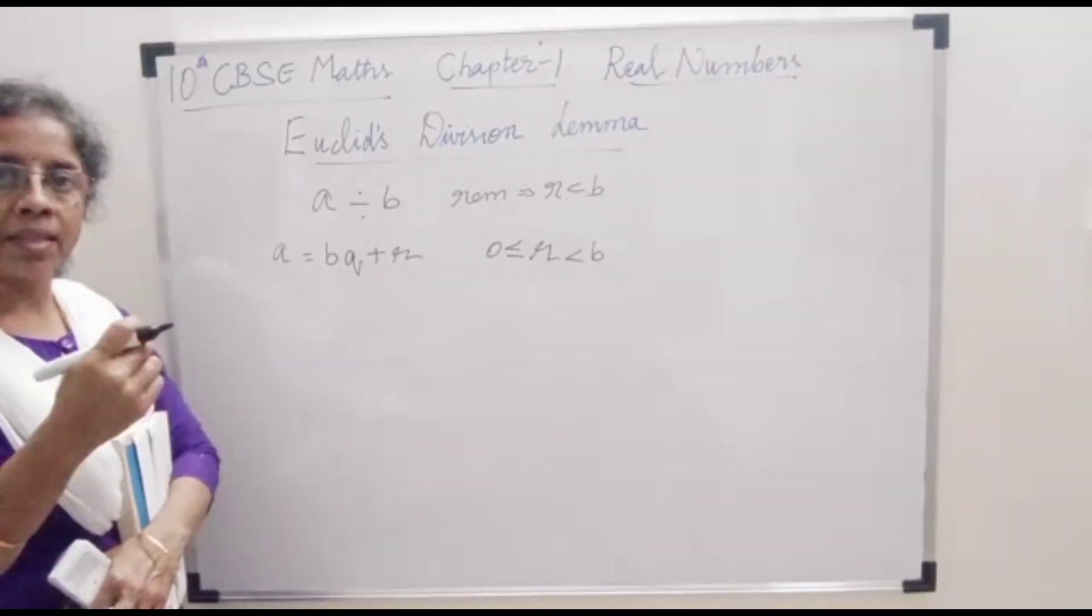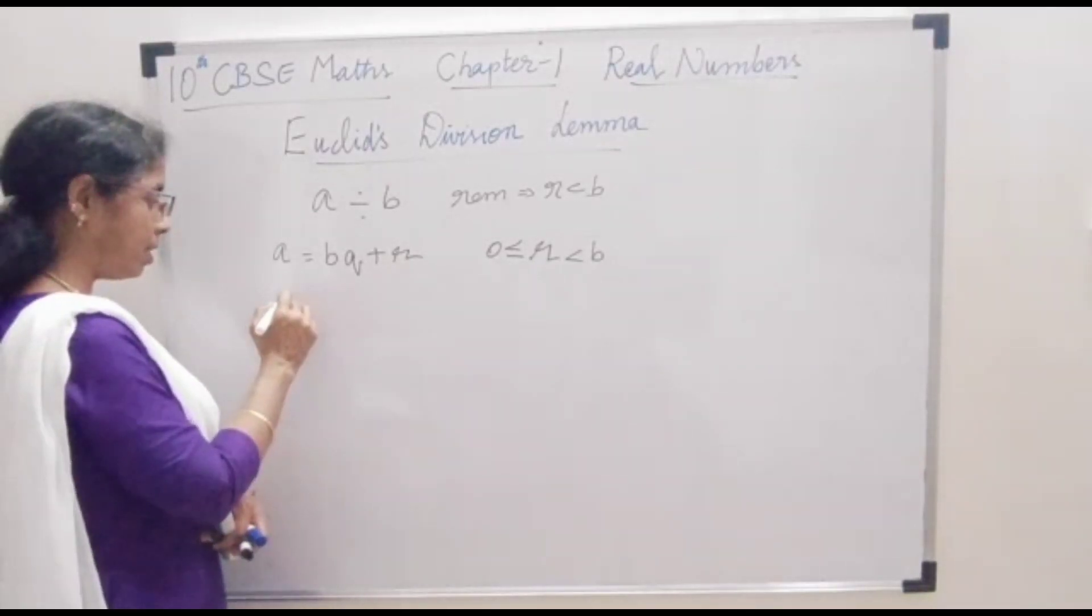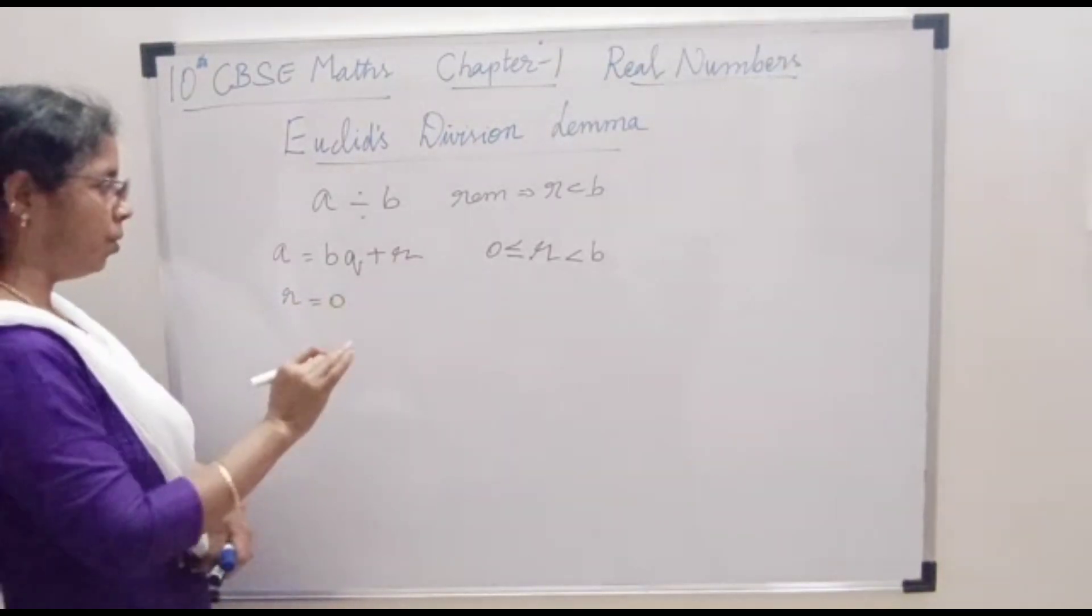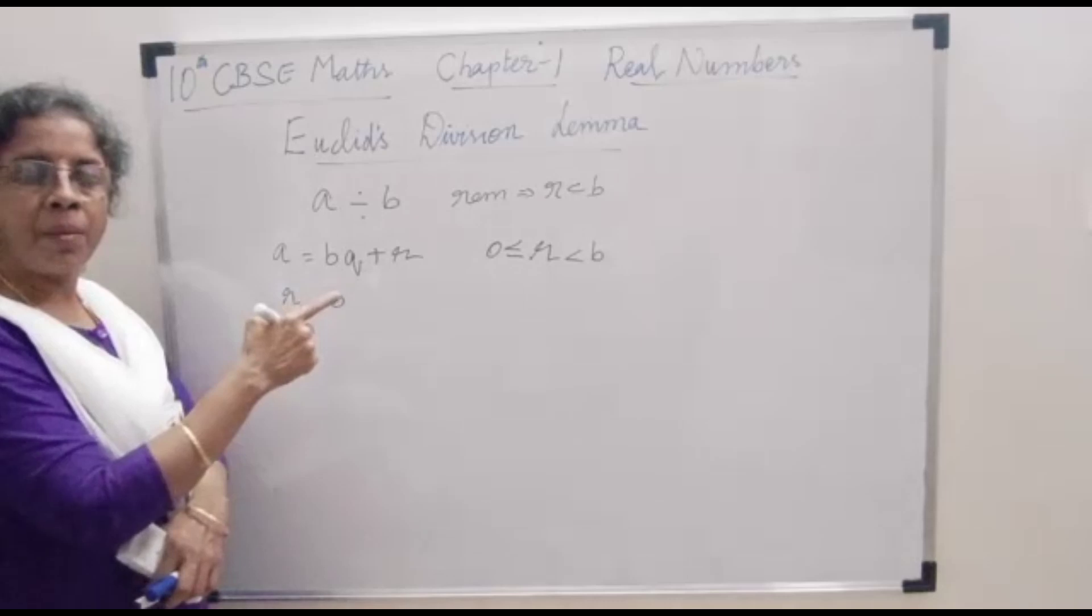After that, you have to take R should be greater than or equal to 0 but less than B. This is the second step. If R is equal to 0, then B will be considered as the HCF.